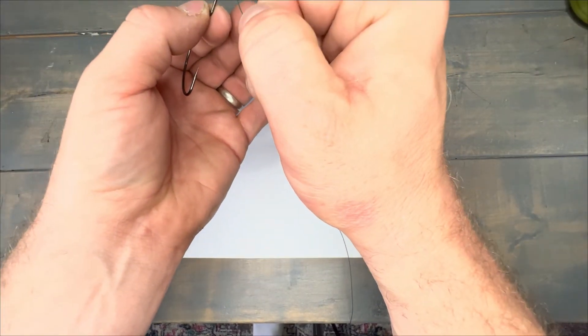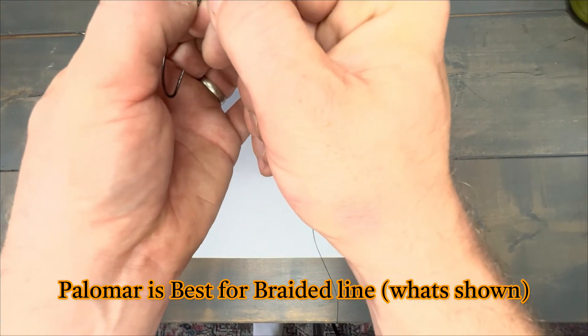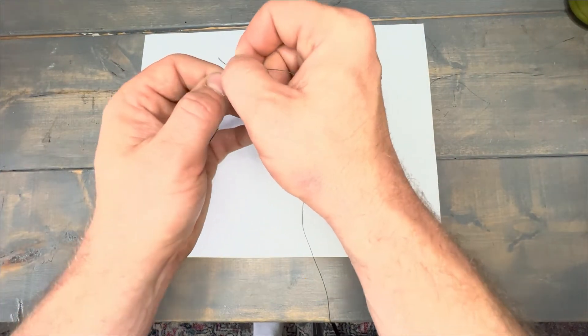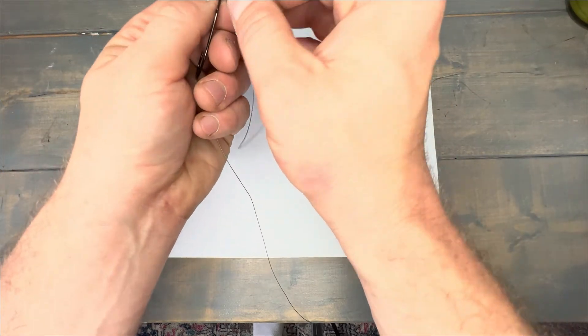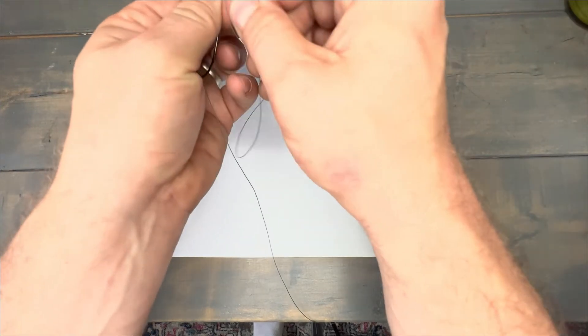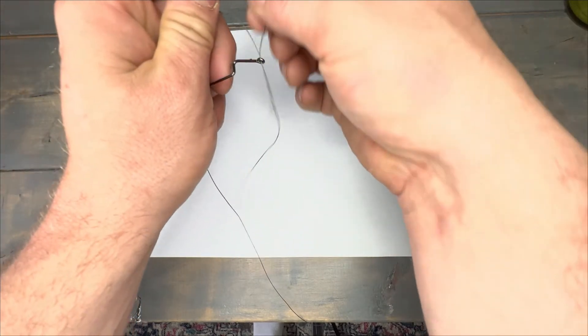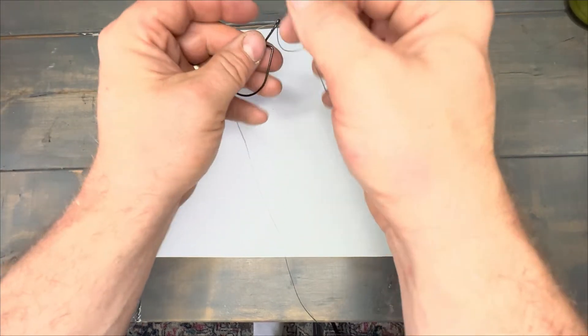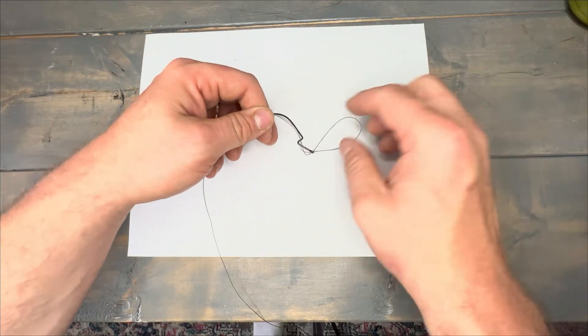And this is the Palomar knot. You feed it through and then double back through it. If your line is cut nicely, it's easier. Once you double it back through, there you go. So you have two ends like that.